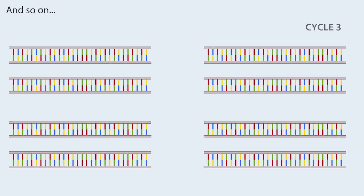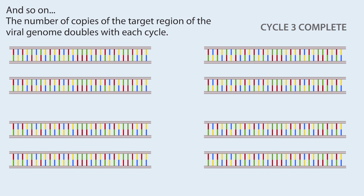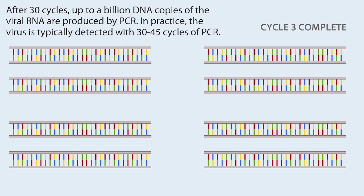The number of copies of the target region of the viral genome doubles with each cycle. After 30 cycles, up to a billion DNA copies of the viral RNA are produced by PCR. In practice, the virus is typically detected with 30 to 45 cycles of PCR.